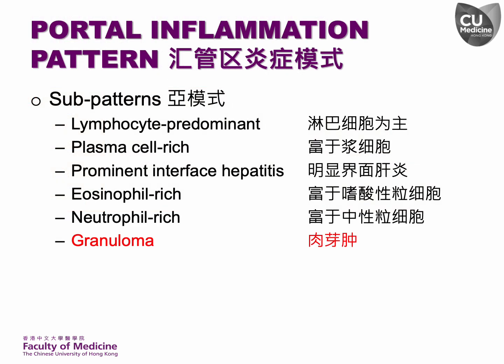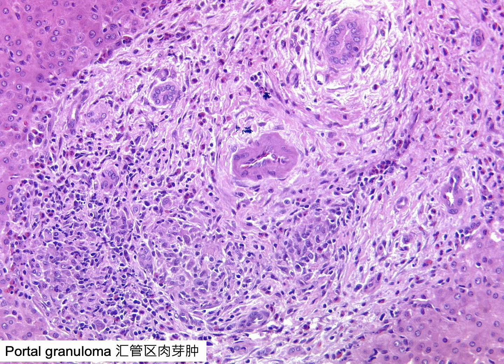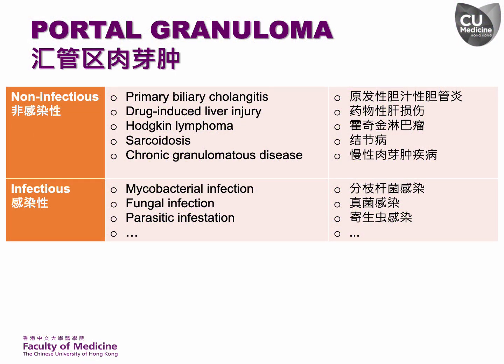Last but not least is the portal granuloma or granulomatous inflammation. There is a non-caseating epithelioid granuloma present in a portal tract. An unpaired hepatic artery is observed without an accompanying interlobular bile duct. In this portal tract, there is a vague non-caseating epithelioid granuloma. This table outlines the primary differential diagnosis for portal granuloma, which may have infectious or non-infectious origins.